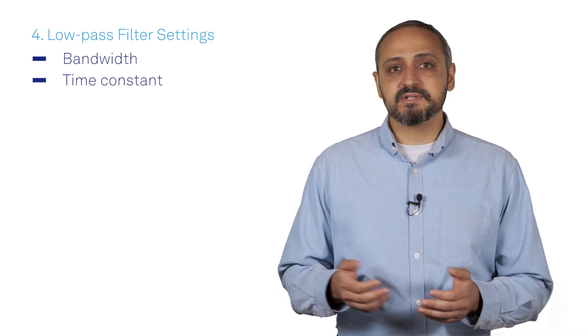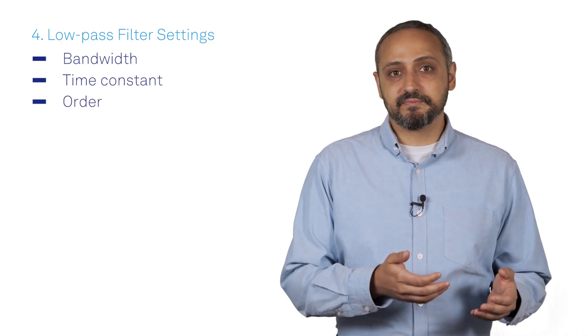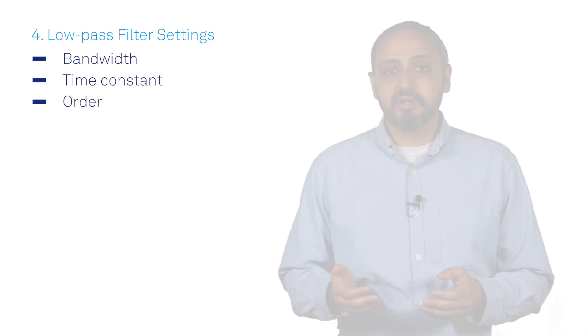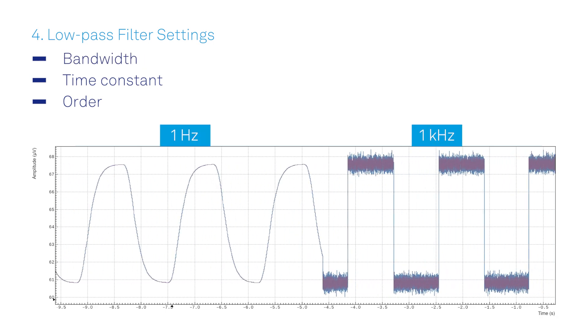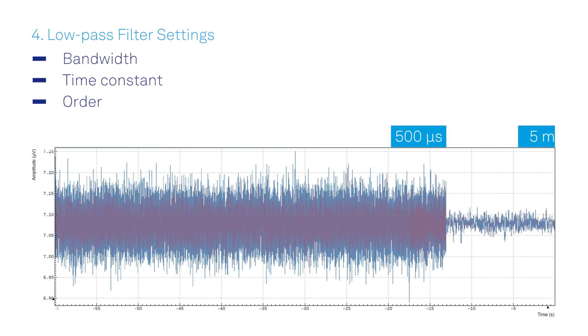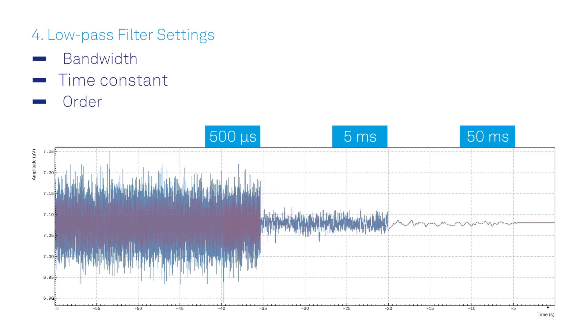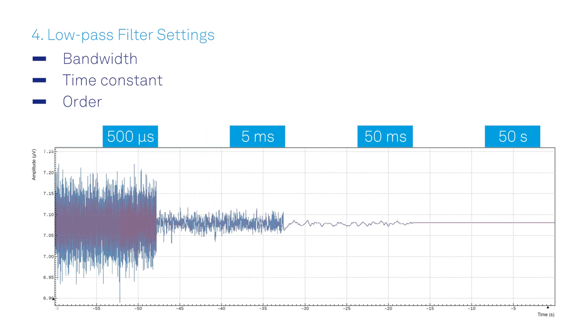Its specifications are the filter bandwidth or time constant and the filter order. Depending on your application, you might need a broad filter bandwidth with a short time constant for fast measurements, or a very narrow filter bandwidth to recover signals buried in the noise with time constants longer than a few seconds.